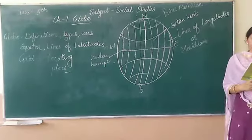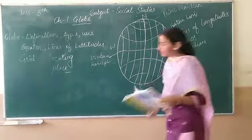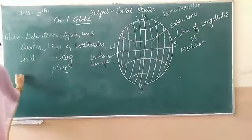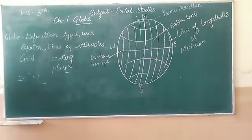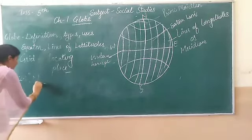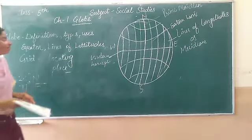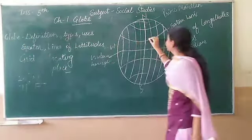Let us take Delhi as an example. The latitude of Delhi is 28 degrees north, and the longitude of Delhi is 77 degrees east. So where the latitude 28 degrees north and longitude 77 degrees east intersect, that is the location of Delhi.